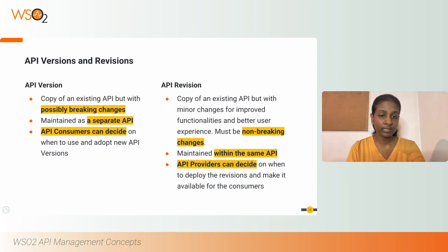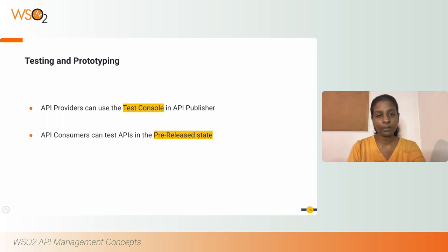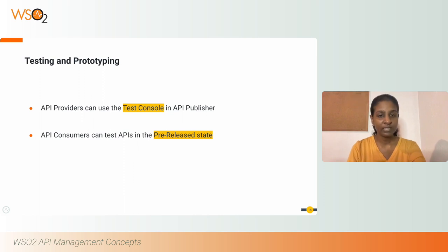The API Publisher portal allows you to easily configure all these functionalities. Testing and Prototyping: It is important that you test your API before exposing it to external users. The API Publisher portal of WSO2 API Manager provides a test console so that you can try it out yourself, ensuring the API meets the required functionalities before publishing. The pre-released lifecycle state allows external consumers to test a prototype implementation of your actual API, helping you make required enhancements and release a better quality product.